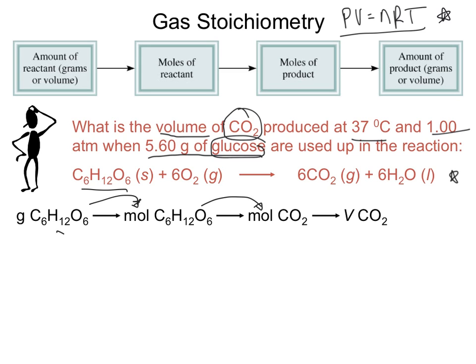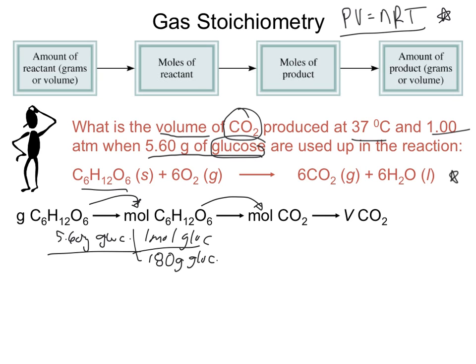We start with 5.60 grams of glucose. In order to go from grams to moles of glucose, we divide by our molar mass — we add up all the numbers on the periodic table corresponding to each element and its quantity. That cancels out grams of glucose, putting us into moles of glucose. I'll continue with the dimensional analysis setup because it's the most straightforward approach.